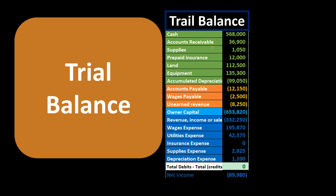The account balances shown in the trial balance are generated from the general ledger. Remember the process: we record transactions, post them to the general ledger, then take those ending balances to construct the trial balance. The trial balance may have two columns — a debit column and a credit column — showing that the debits equal the credits.